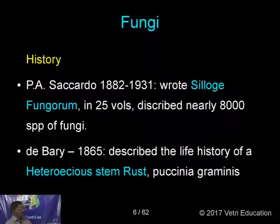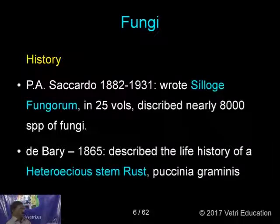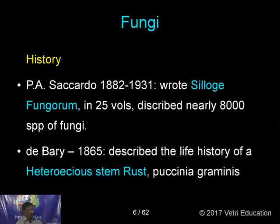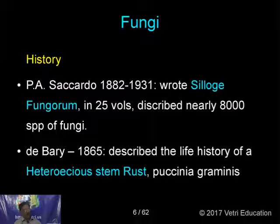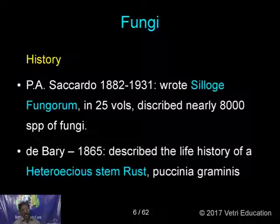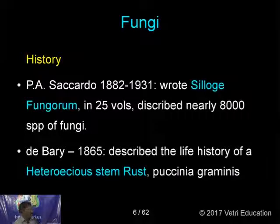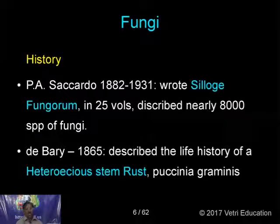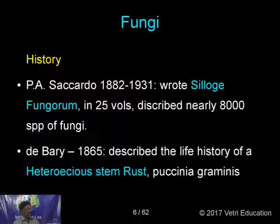D. Berry, in 1865, described the life history of a heteroecious stem rust — example, Puccinia graminis. Heteroecious means a parasitic plant lives on a host and completes its life cycle. But this Puccinia graminis needs two hosts — the wheat plant and the Barberry plant — to complete its life cycle. So that is called heteroecious stem rust.